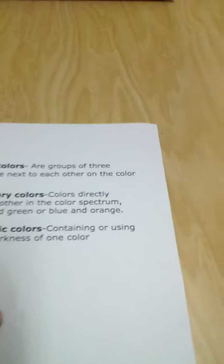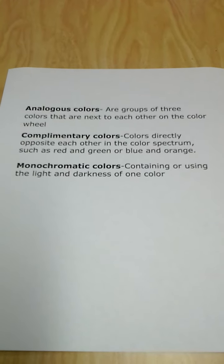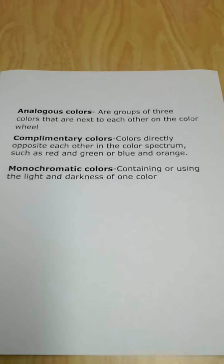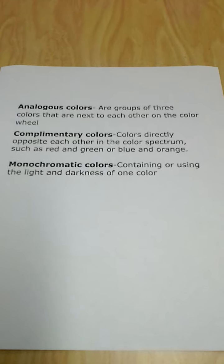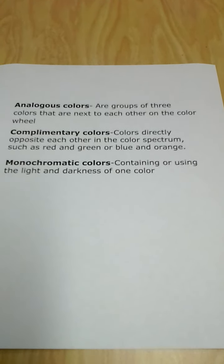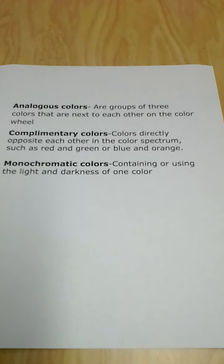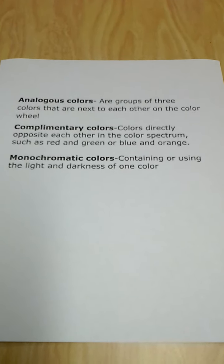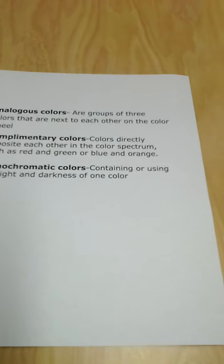There are three more definitions we need to look at in this unit. Analogous colors are a group of three colors that are next to each other on the color wheel. Complementary colors are colors directly opposite each other in the color spectrum, such as red and green or blue and orange. Monochromatic colors are colors containing or using the light and darkness of one color. I'm going to show you an example of those.